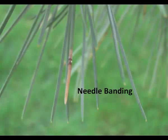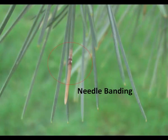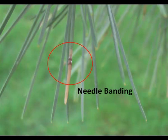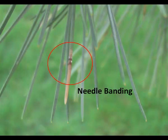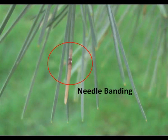Spotting, or banding, of needles on the previous year's growth is a key symptom of this disease. Once a needle is infected, the tip beyond the infection dries out, leaving only a green base. Eventually, during the next season, the infected needles will fall off.